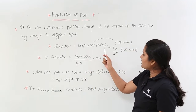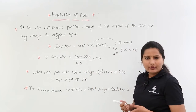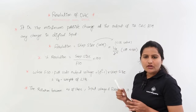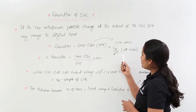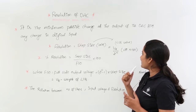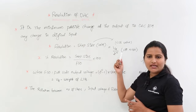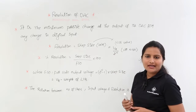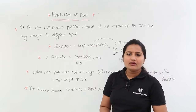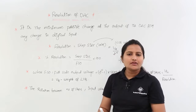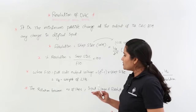The step size can be taken as the LSB value. For an n-bit DAC, the LSB value is equivalent to VR divided by 2 to the power n. You know that for DAC the LSB equivalent voltage is equal to VR by 2 power n.